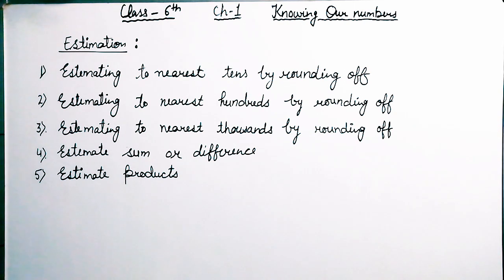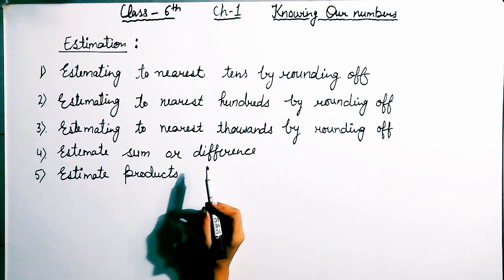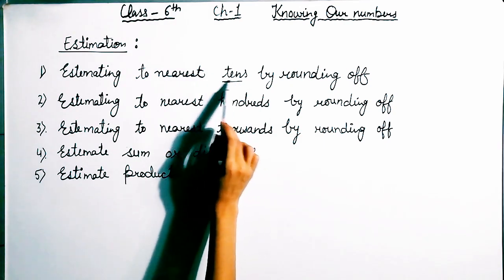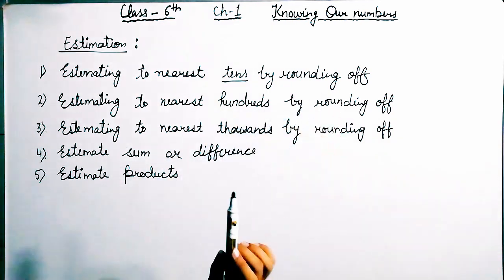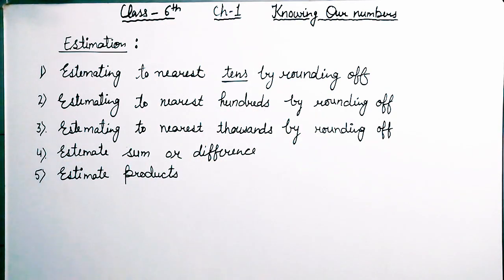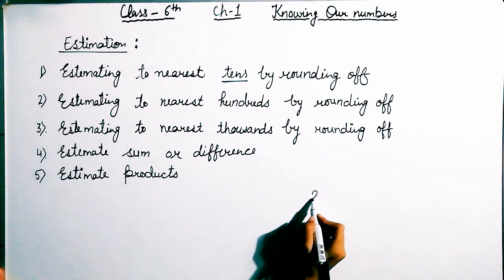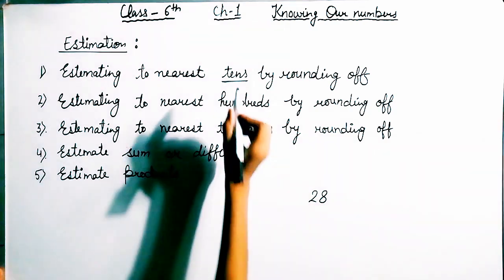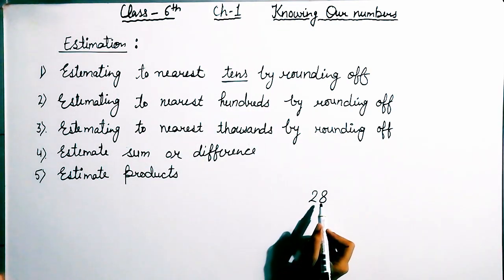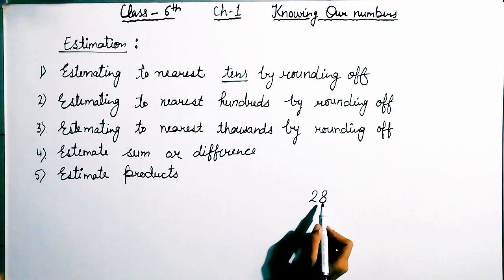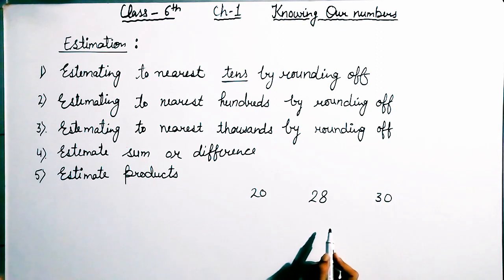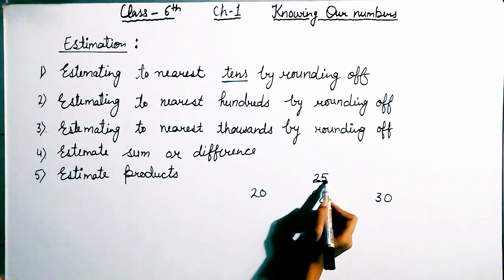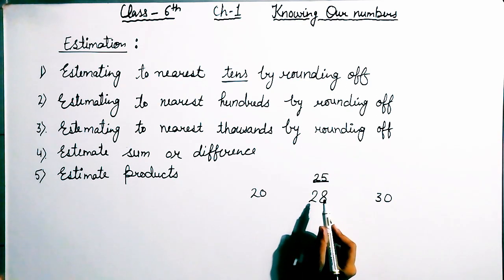The first part is estimating to the nearest ten by rounding off. We need to do estimation of numbers because we are talking about large numbers in this chapter. So estimation is done to the nearest tens value. I am taking one example — the number 28. We have to estimate this to the nearest ten. In tens, two-digit numbers are there. So 28 lies between 20 and 30, and the exact middle number is 25.